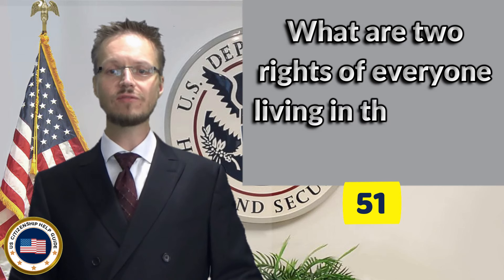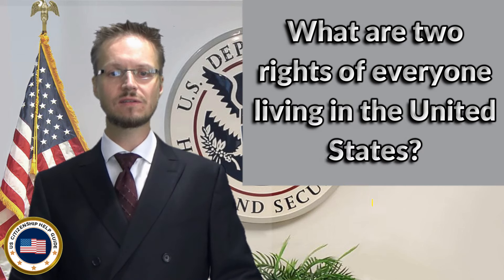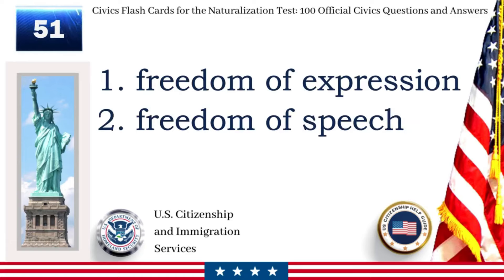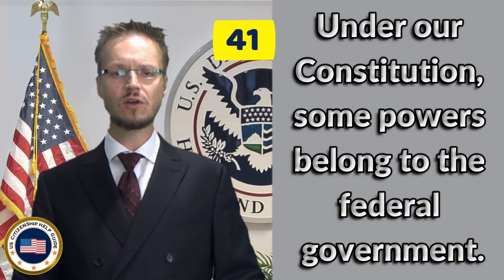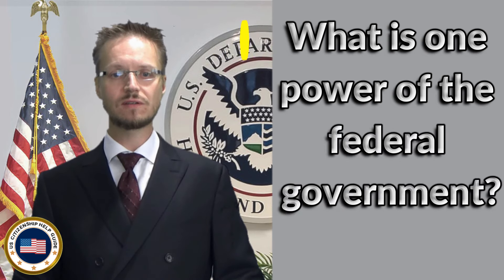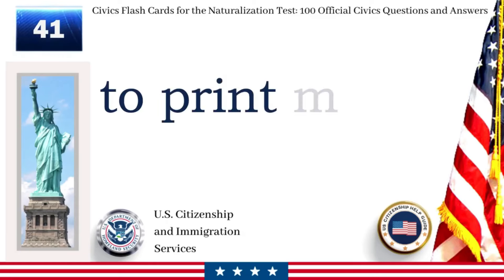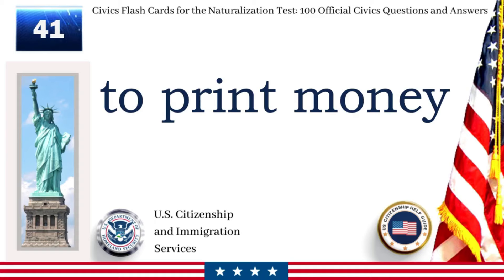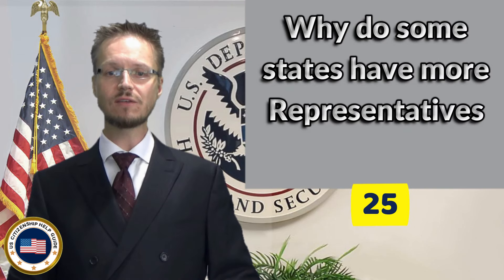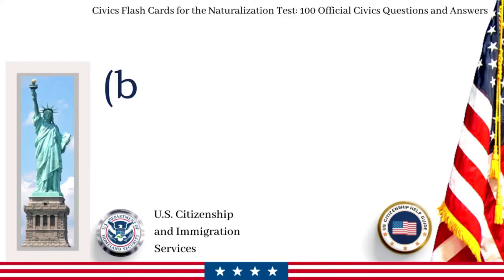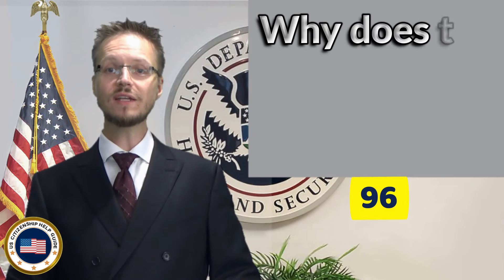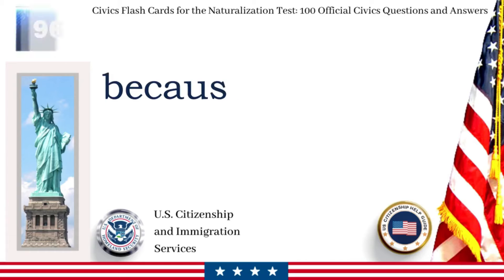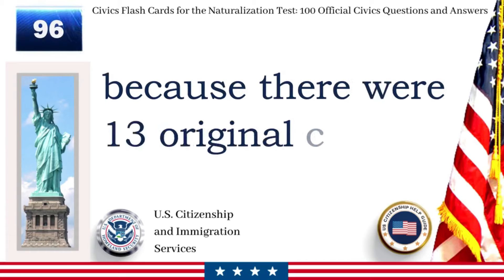What are two rights of everyone living in the United States? Freedom of expression. Freedom of speech. Under our Constitution, some powers belong to the federal government. What is one power of the federal government? To print money. Why do some states have more representatives than other states? Because of the state's population. Why does the flag have 13 stripes? Because there were 13 original colonies.